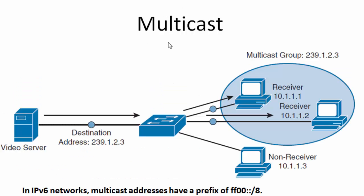The third type of transmission is multicast. In multicast, traffic travels from a single host to multiple devices, not all devices. What makes this possible in IPv4 networks is the use of a Class D address. As you see in this diagram, the multicast address here is 239.1.2.23, and this multicast address represents the address of the multicast group. If the video server wants to send a packet to this multicast address, all devices wanting to receive this packet can join the multicast group 239.1.2.23. Devices 10.1.1.1 and 10.1.1.2 are joined to the multicast group, so they will receive the multicast packet. But this other device is not joined to the multicast group, so it will not receive this packet.